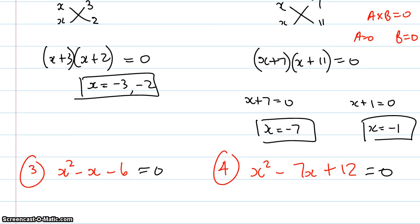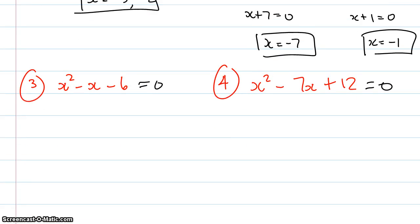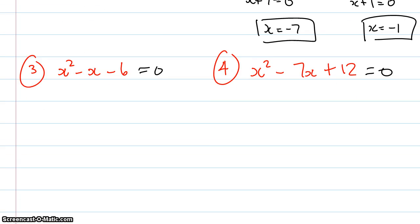So if I move down to the third example, x squared minus x minus 6, again I use the cross method and I get negative 3 and 2. Hopefully you can see that or at least recognize that that's the correct answer.